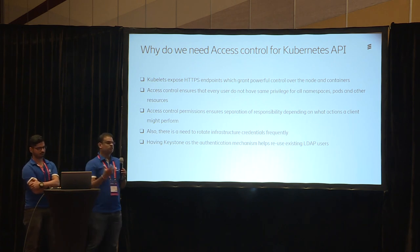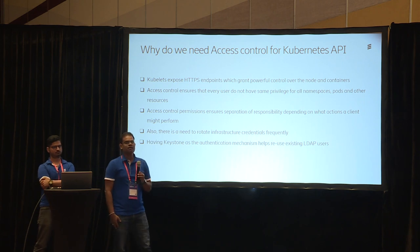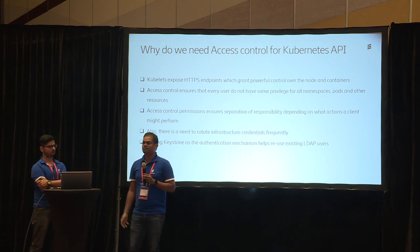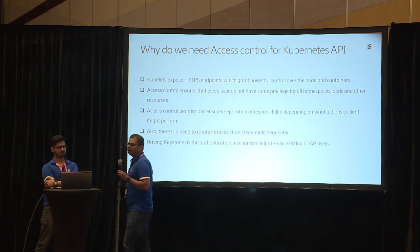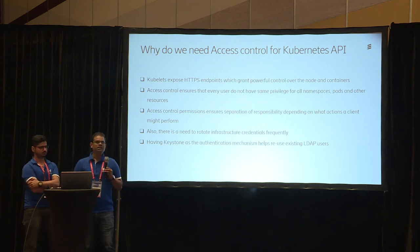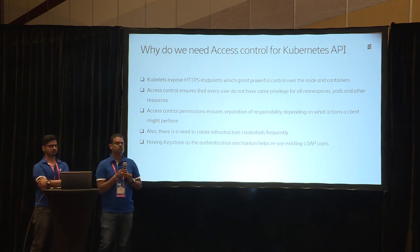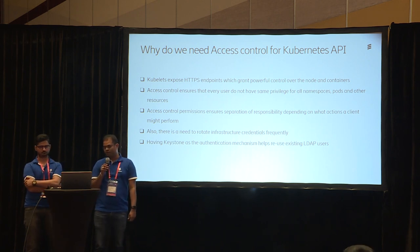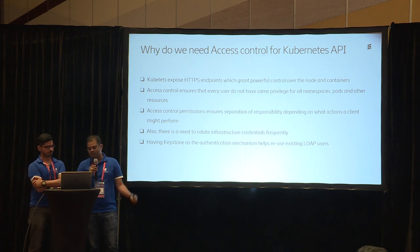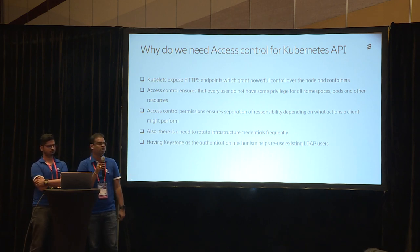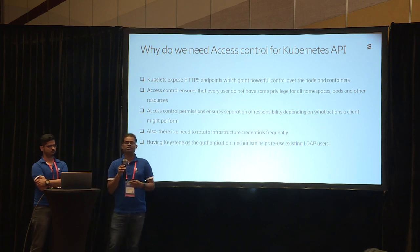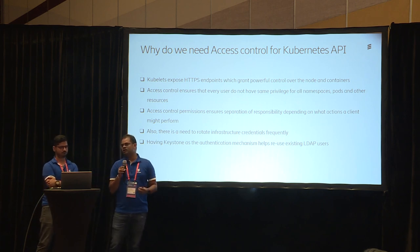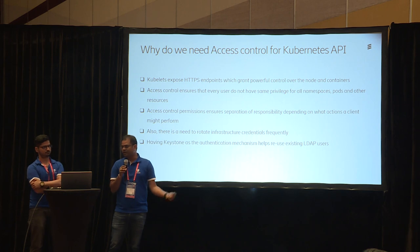Apart from granular access controls, we also need to have an authentication mechanism. Kubernetes comes with multiple ways you can authenticate, but if you can leverage Keystone itself, it has a lot of advantages beyond what Kubernetes provides by default. One of the biggest advantages is rotating infrastructure credentials — we can have Keystone rotate your tokens periodically to make it more secure.